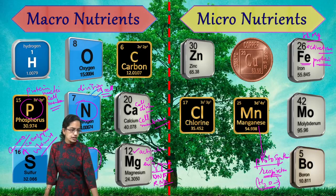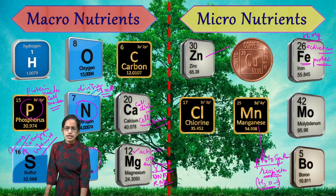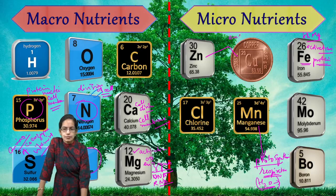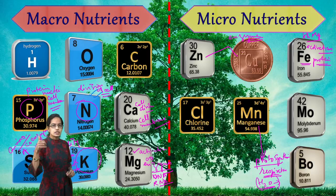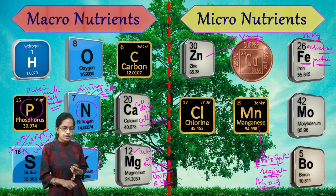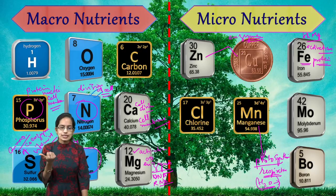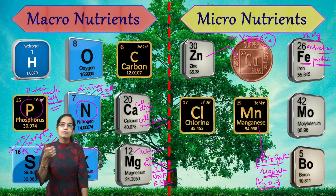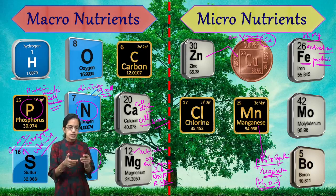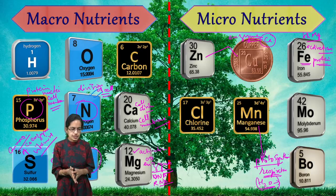The next important micronutrients are zinc and copper, which we can take together. Zinc and copper are very important, similar to iron, for enzyme activation — that is one of their major functions. They are also important for the utilization of calcium; once calcium is present, it can be utilized only when zinc and copper are also present.